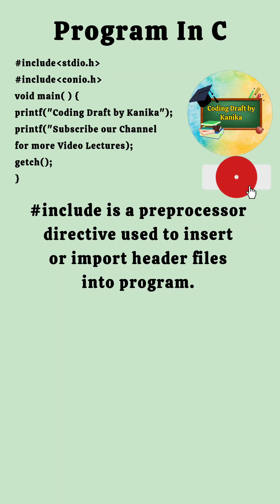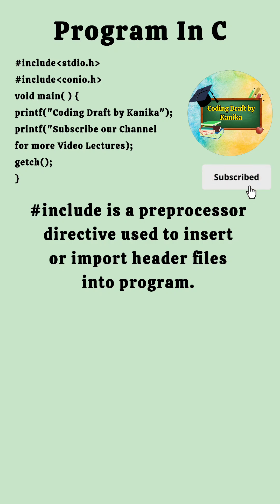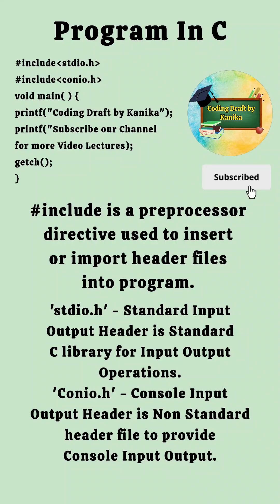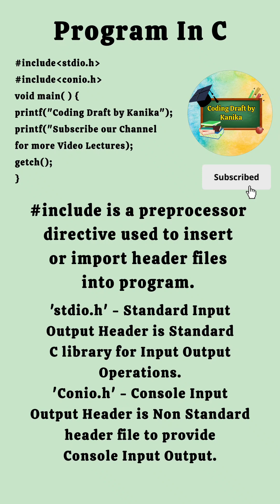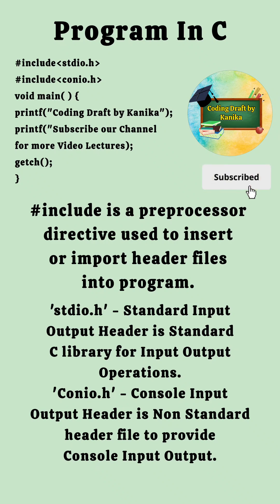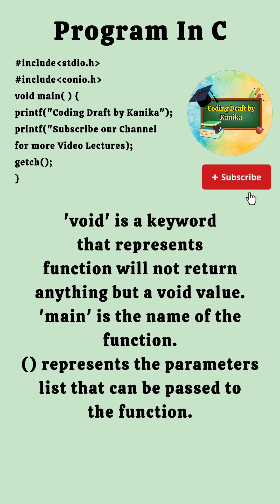Hash include is a preprocessor directive used to insert or import header files into the program. stdio.h, standard input output header, is a standard C library for input and output operations. conio.h, console input output header, is a non-standard header file used to provide console input and output.